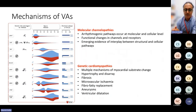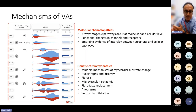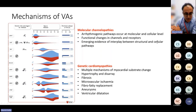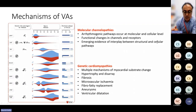The mechanisms leading to ventricular arrhythmia in molecular channelopathies occur at a cellular level — functional changes in ion channels and receptors. In Brugada syndrome, there is interplay between structural heart disease and cellular pathways. In genetic cardiomyopathies, substrate changes such as hypertrophy, disarray, and fibrosis are hallmarks of hypertrophic cardiomyopathy. Fibro-fatty replacement is pathognomonic for arrhythmogenic right ventricular cardiomyopathy, and ventricular dilatation is seen in dilated cardiomyopathy.